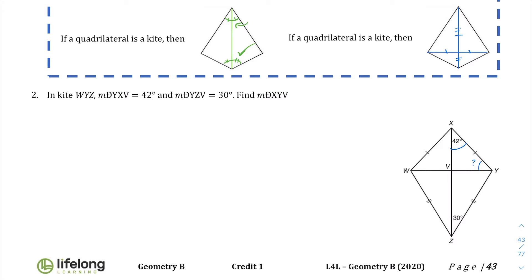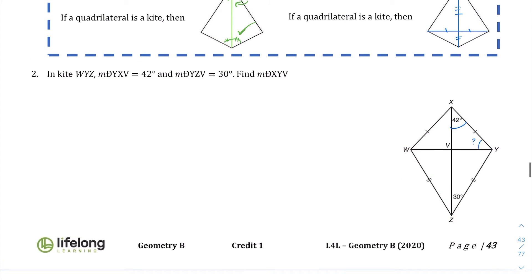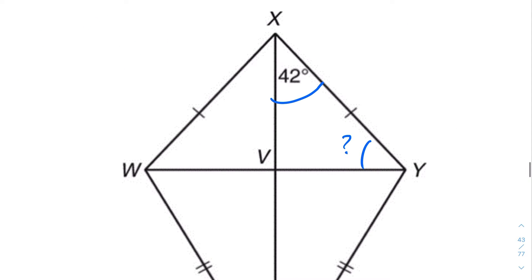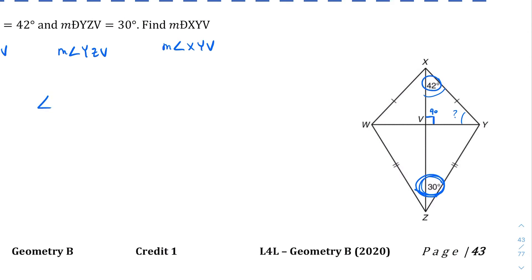We don't actually need that 30-degree angle to solve this. This angle here has to be 90 degrees. So here's what we need to do: we know this is 42, plus 90, plus x is going to equal 180 degrees, since the interior angles of this triangle add up to 180 degrees. So 132 plus x equals 180. Subtract 132 from both sides: x equals 48 degrees.